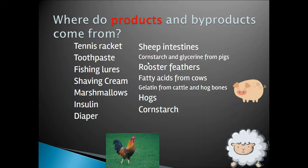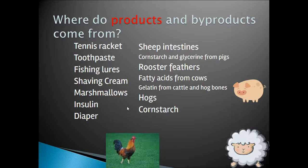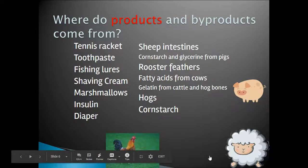Toothpaste contains cornstarch from corn, but also glycerin that comes from the fat of pigs. Fishing lures for fly fishing might include rooster feathers. Shaving cream has fatty acid from cows. Marshmallows contain gelatin from cattle and hog bones. Insulin was originally derived from hogs. And diapers will contain some cornstarch.